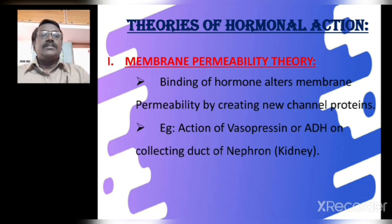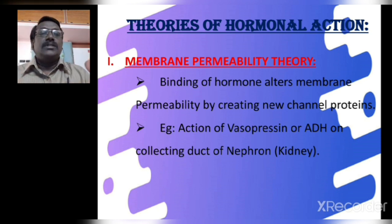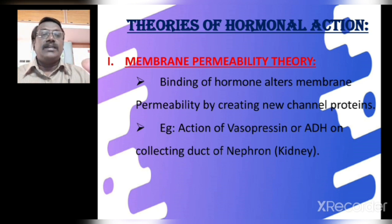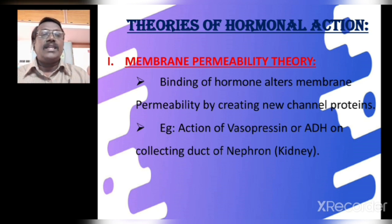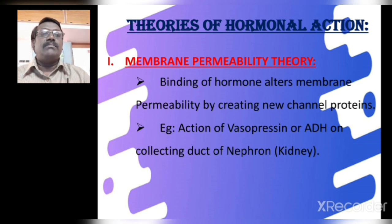For convenience, I categorize the mechanism of reaction performed by different types of hormones into four aspects. Based on the performance done by a hormone on its target cell, I have named four theories. The first one is membrane permeability theory. The second one is adenyl cyclase theory. The third one is intracellular second messenger theory. And the fourth one is gene activation theory.